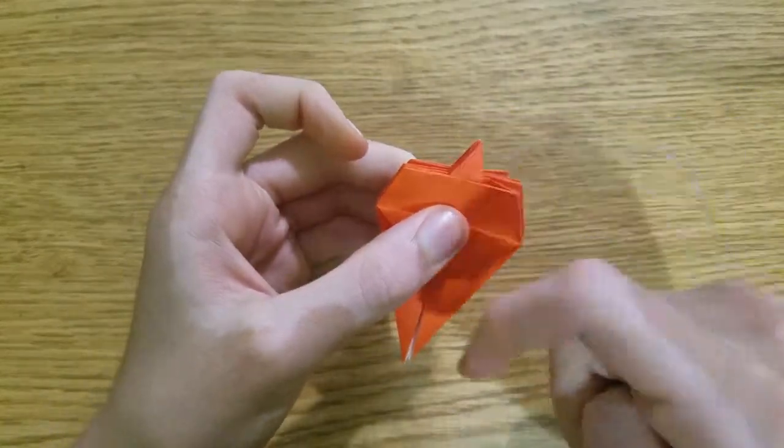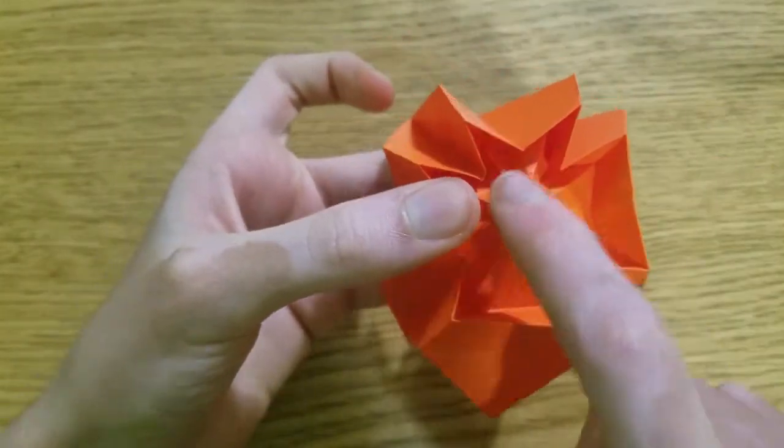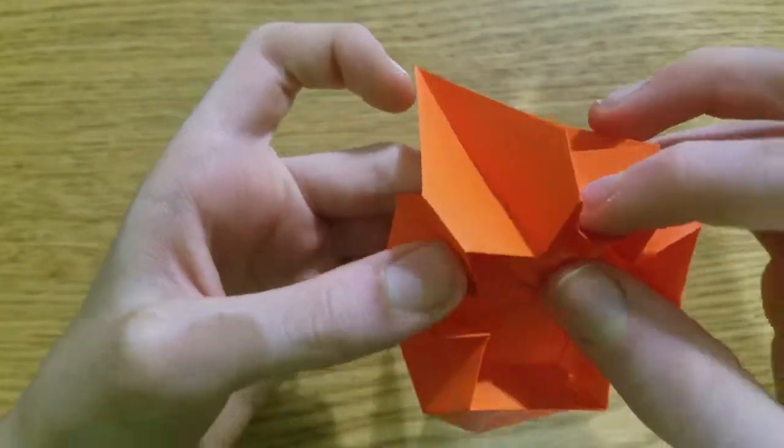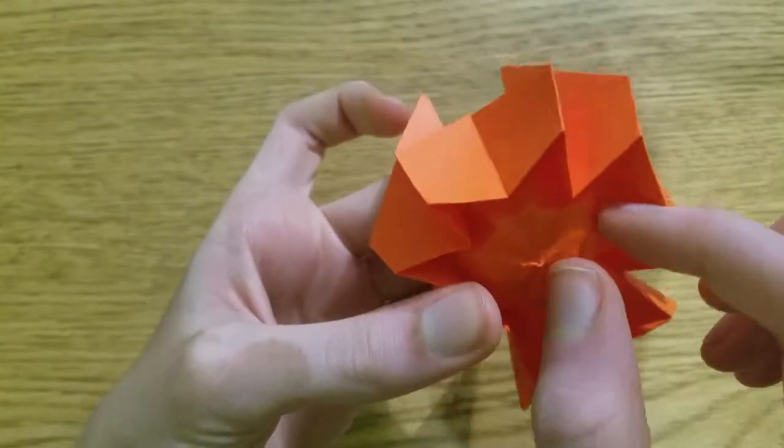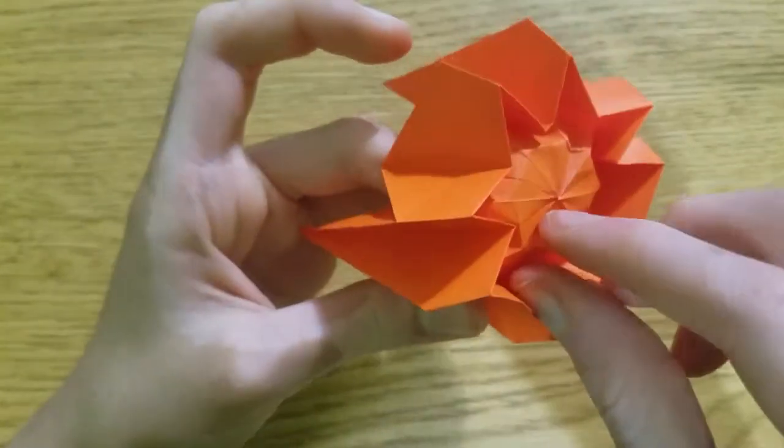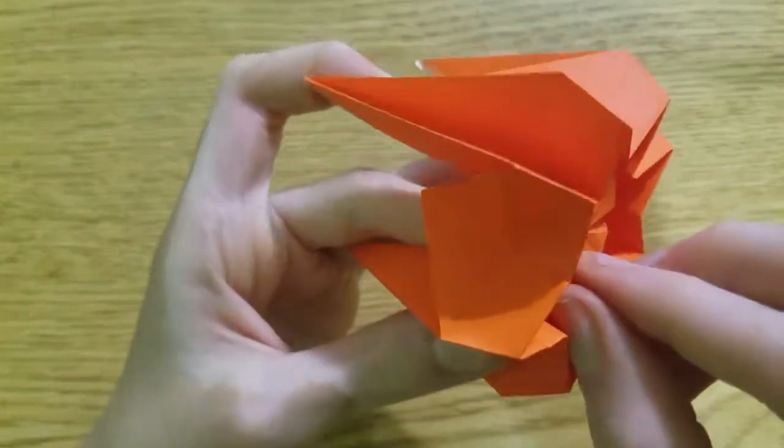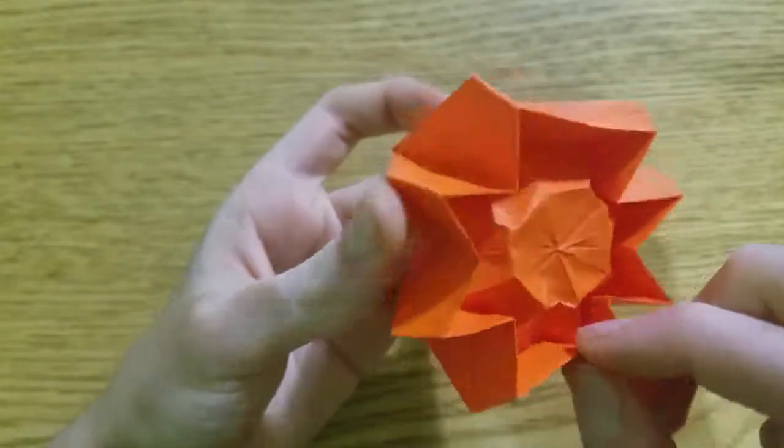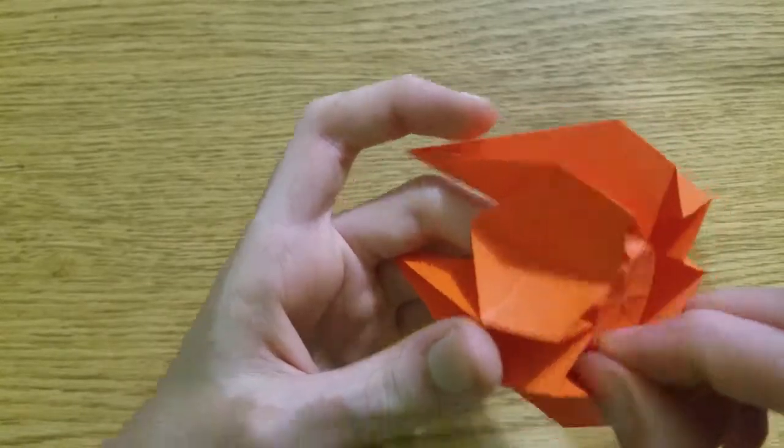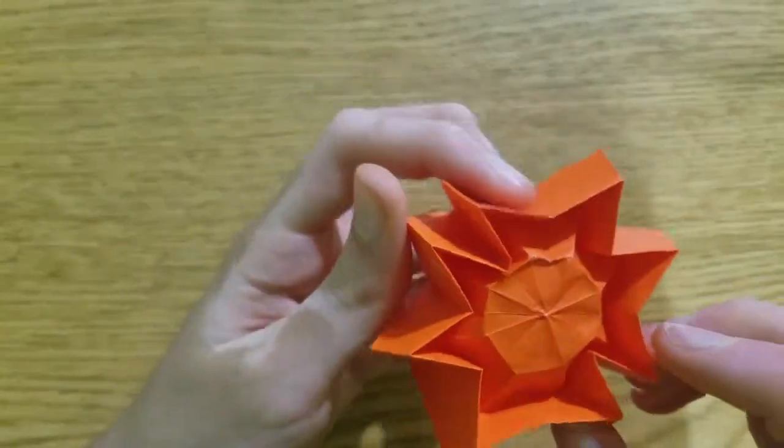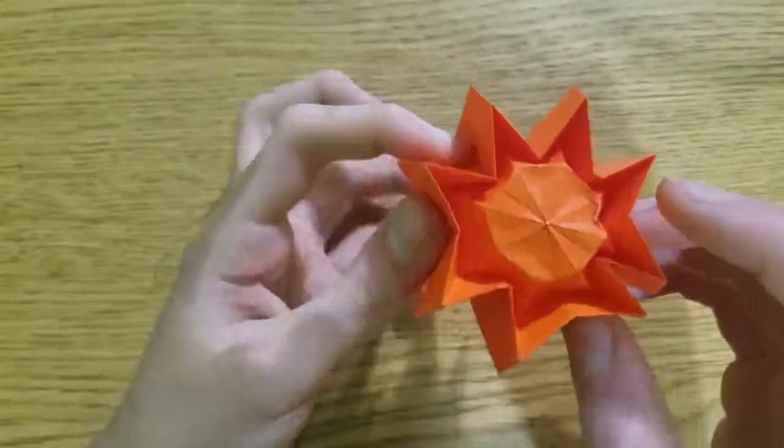We're just going to sink this point back in. So open it up. You'll see the little octagon, make mountain folds around all of those, around the whole octagon.